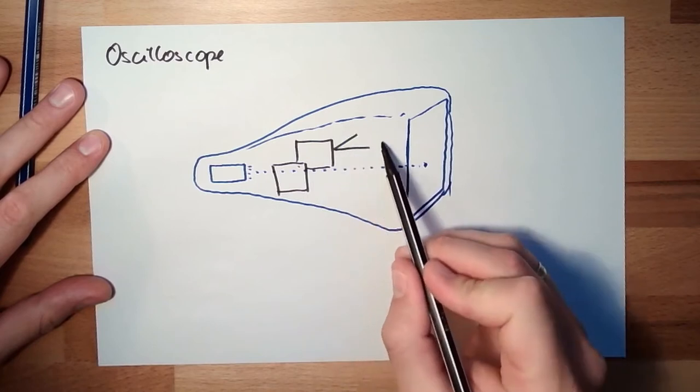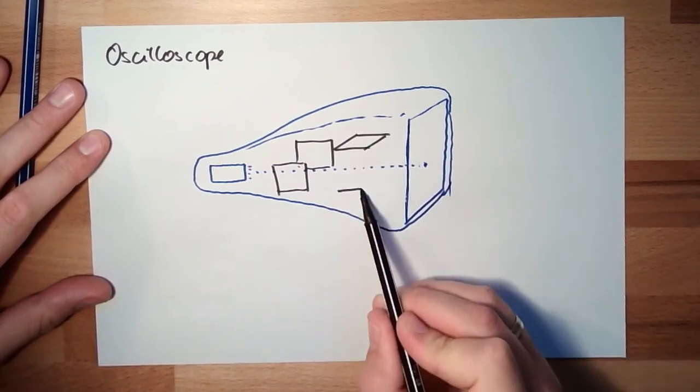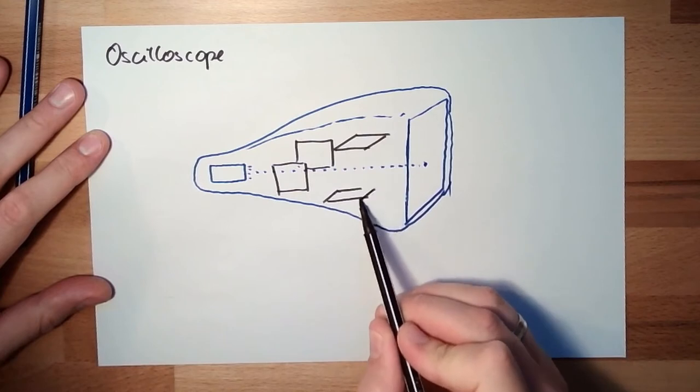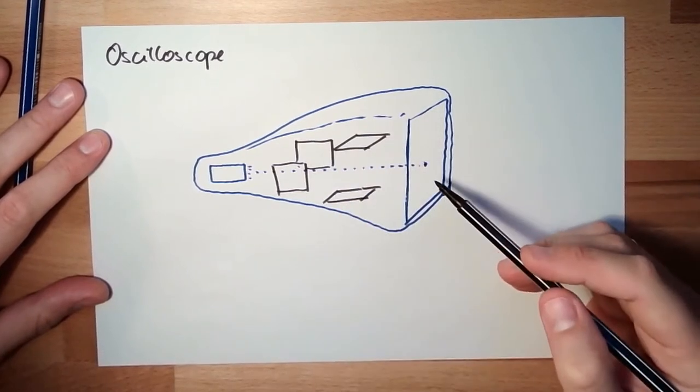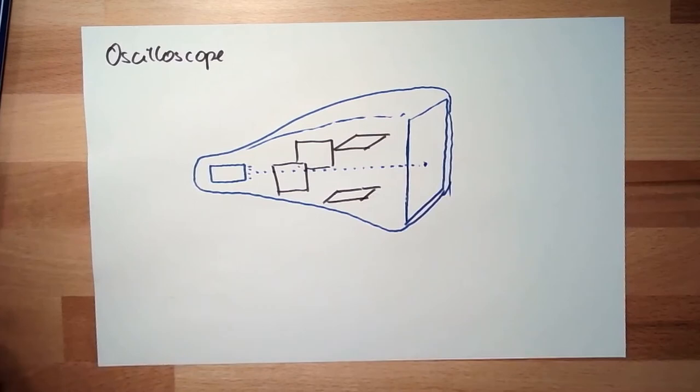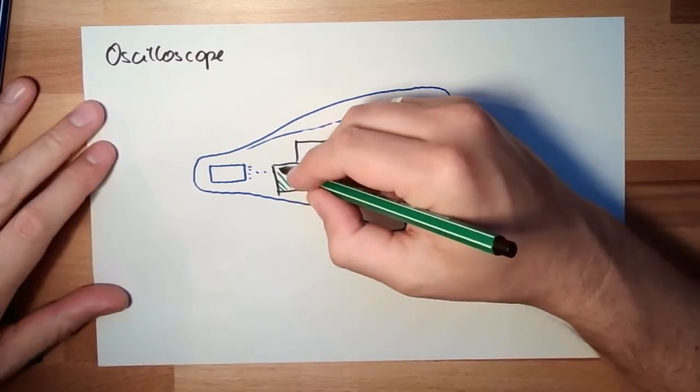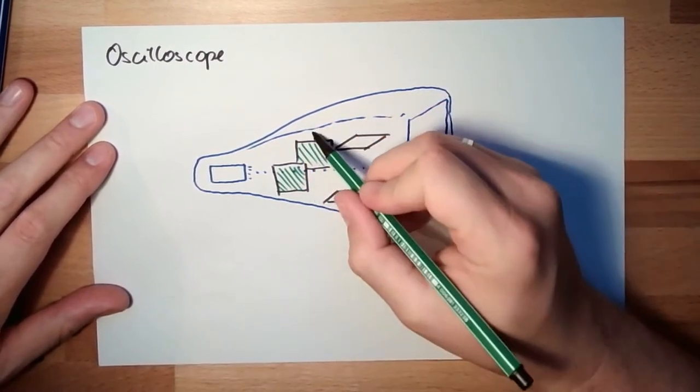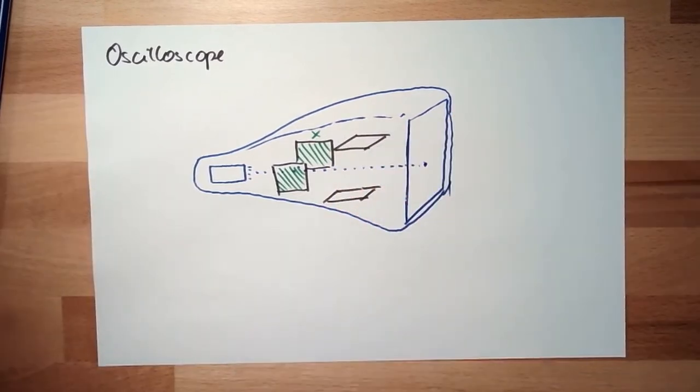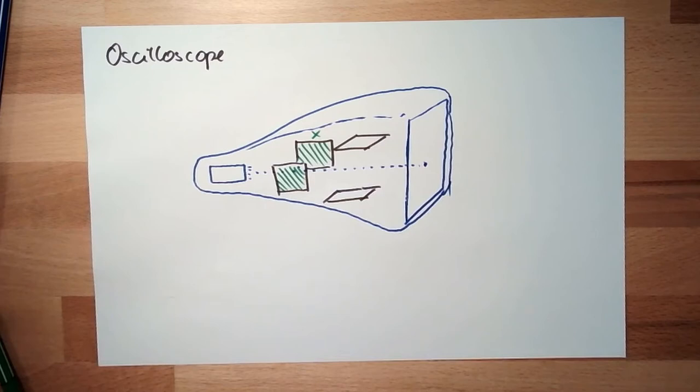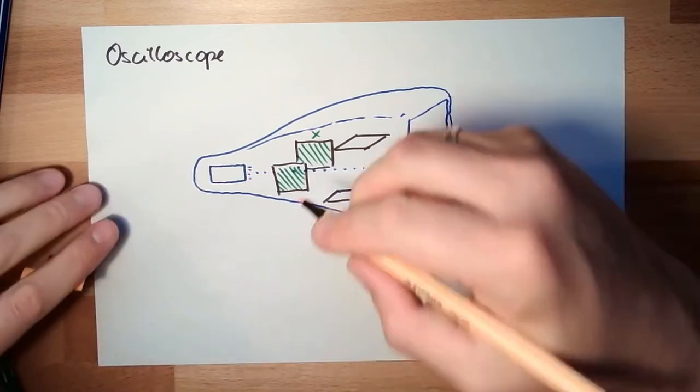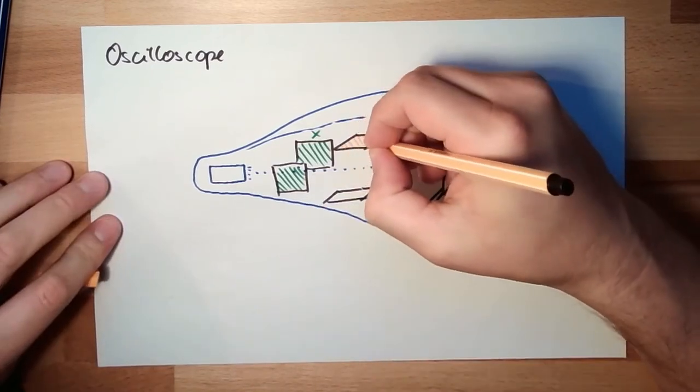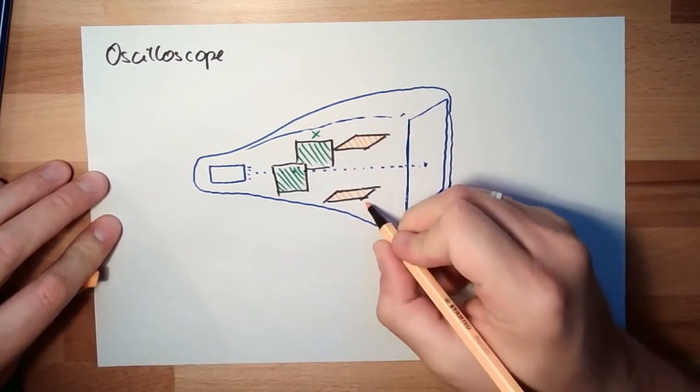And then there are two plates which are deflecting the screen in y-axis. These ones, make them green, these are the x-plates. And these ones, we make them orange, these ones are the y-plates.